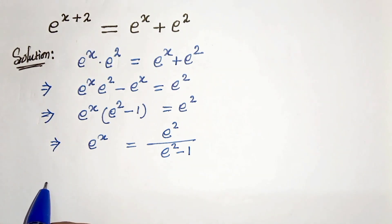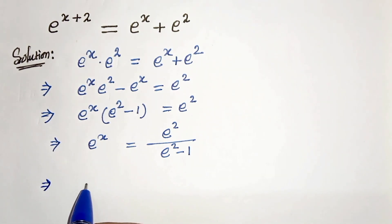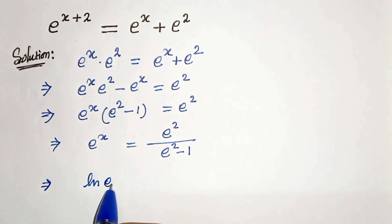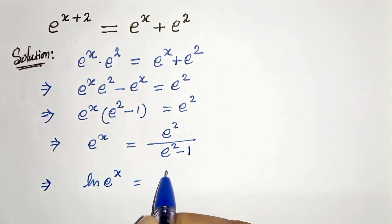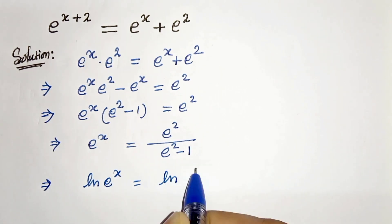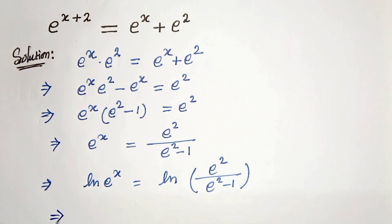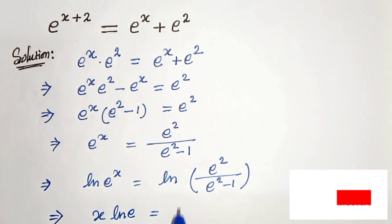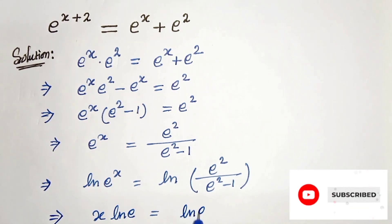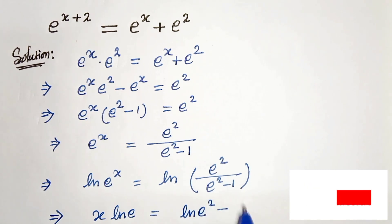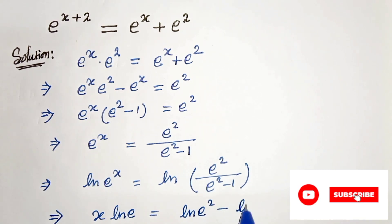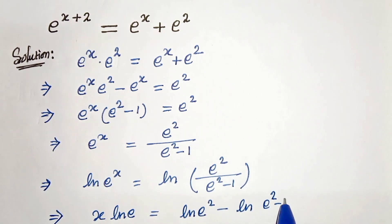Now let us take ln of both sides. So we will get ln of e to the power x equals ln of e to the power 2 divided by e to the power 2 minus 1. In the next step we can write this as x times ln e equals ln of e to the power 2 minus ln of e to the power 2 minus 1.